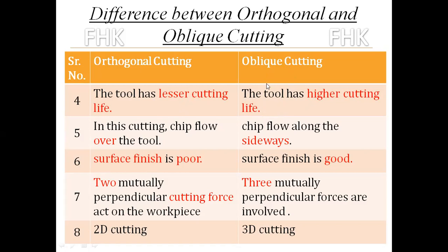Fifth differentiation point: In orthogonal cutting, the chip flows over the tool face, whereas in oblique cutting, the chip flows along the sideways. So the wear of the tool face in orthogonal cutting is more. Whereas since the chip flows sideways in oblique cutting, the face wear will be less. This also affects the tool life.